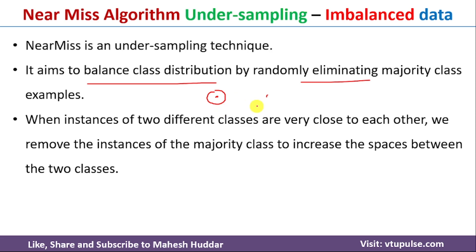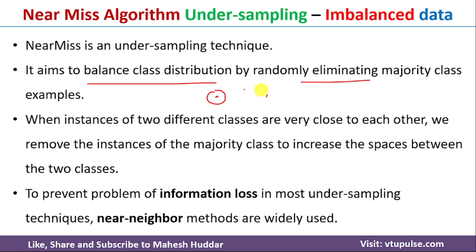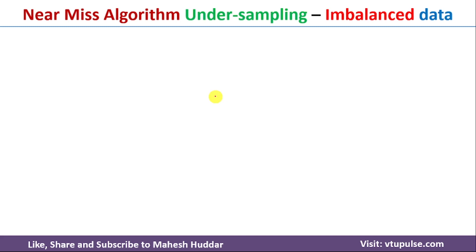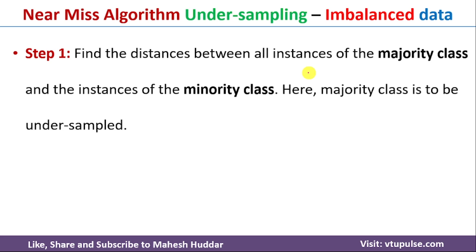To select these particular two examples, we will use the nearest neighbor algorithm — the two examples which are nearest to each other will be selected, and between them the majority class example will be deleted. The NearMiss algorithm works in two steps. The first step is to find the distances from all instances of the majority class to all instances of the minority class.